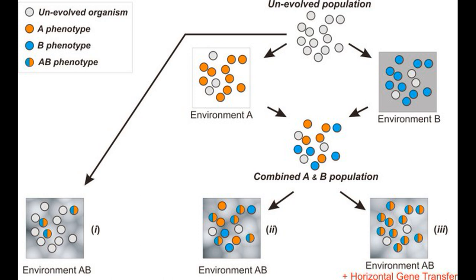HGT allows bacteria to evolve much faster than what would otherwise be possible. HGT was first widely recognized when multidrug resistance became an issue in the mid-20th century. Bacteria can, and have, evolved resistance via mutations, but HGT allows the genes that confer resistance to be transferred between different strains or species.